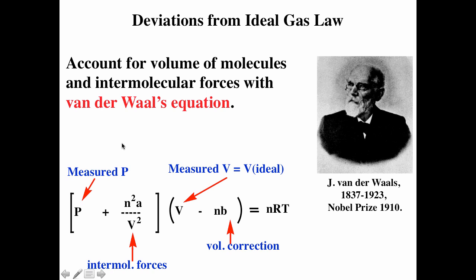Here's Van der Waals' equation. It looks a lot like the ideal gas law — the thing in the square bracket is your P, and here's your V, so you have PV equals nRT. There's a correction term for your pressure that takes into account the intermolecular forces. The measured pressure isn't really as high as it should be because the gas particles are attracted to each other. The term (V − nB) is a correction term for the volume of the gas particles — the volume accessible by the gas isn't really as large as it should be because other gas particles are taking some of the volume.